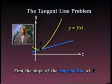Now we'll return to the tangent line problem. We need to find the slope of the line, but we know the coordinates of only one point on it, the point p with coordinates c, f of c. Without a second point on the line, we can't use the standard slope formula.